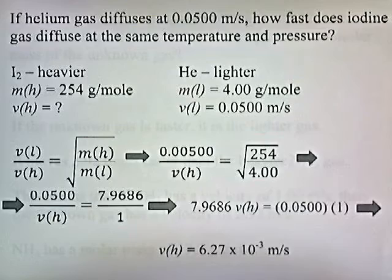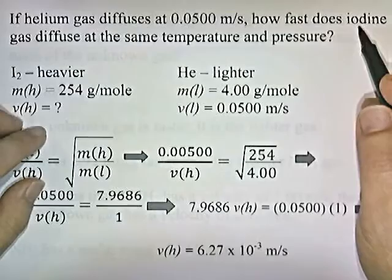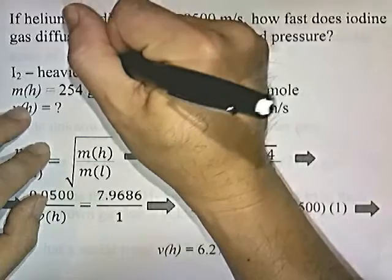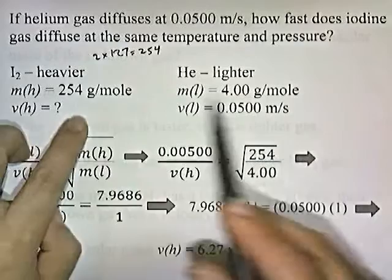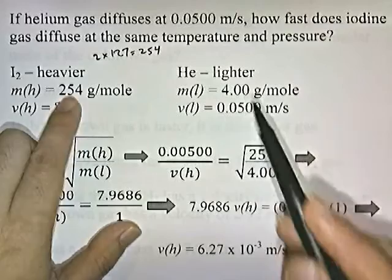If helium gas diffuses at 0.05 meters per second, how fast does iodine gas diffuse at the same temperature and pressure? So, first, let's figure out the molar mass of each substance. Iodine is part of Brinkelhoff, so the formula is I2, and then helium gas is a group 8 element. And then, if you figure out how much one mole of iodine weighs, I think it's like 2 times 127, which gives you 254. So, that's the molar mass of one mole of iodine, and then I2 is two times that, so it's 254. So, iodine is going to be the heavier one. If you look on the periodic chart, helium is 4 grams per mole. So, we know this one's heavier because this is 254, and this one's 4.